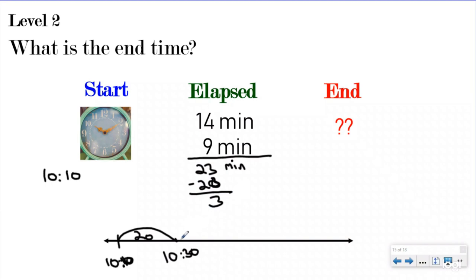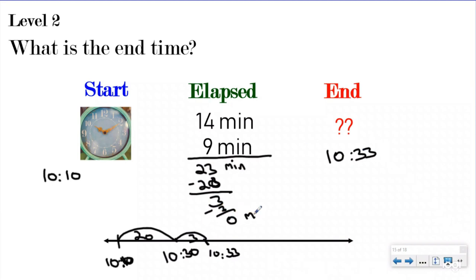Now I have 3 minutes left, so I go another 3 minutes. That brings me to 10:33, which means whatever event we started doing, I ended it at 10:33. I had zero minutes left. If you need more room because you have a lot of elapsed time, you can always do the timeline on another piece of paper.